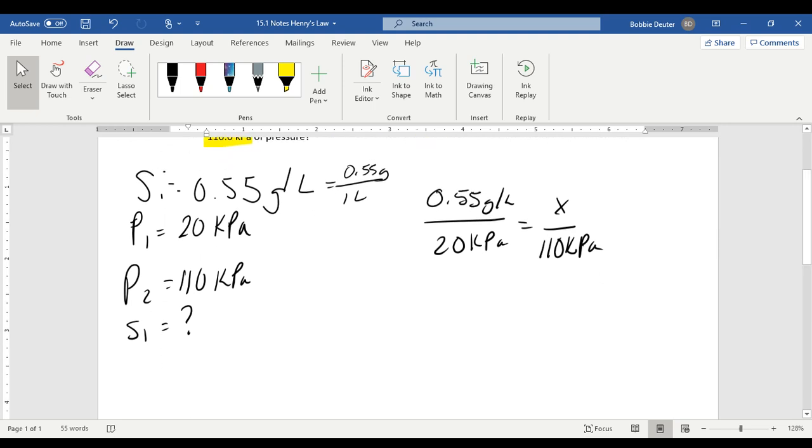Okay, so then we would cross-multiply. Our S2 is equal to 3.03 grams per liter, or 3.03 grams in one liter of solution.